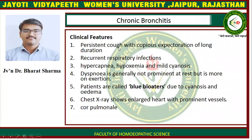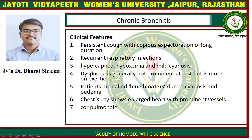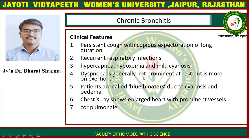The clinical features of chronic bronchitis include: persistent cough with copious expectoration of long duration, recurrent respiratory infections, hypercapnia, hypoxemia, and mild cyanosis. Dyspnea in general is not prominent at rest but is more marked on exertion. Patients are called 'blue bloaters' due to cyanosis and edema. Chest X-ray shows an enlarged heart with prominent vessels.